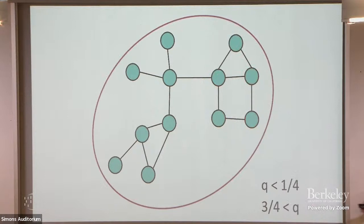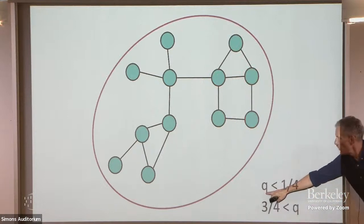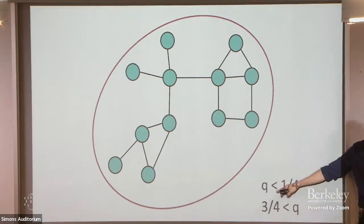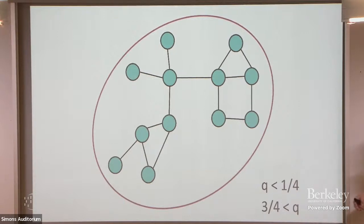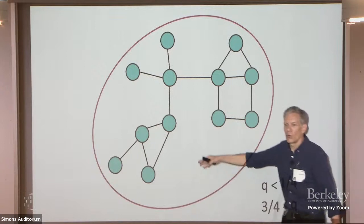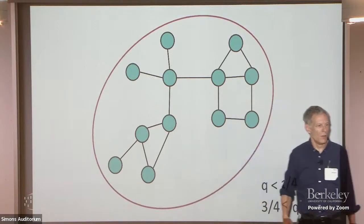Once Q is really low, it's effectively simple contagion — if the threshold is so low that once any one of my friends takes the action I'll take it, things spread through the whole graph. Then either the whole graph gets infected or not at all.